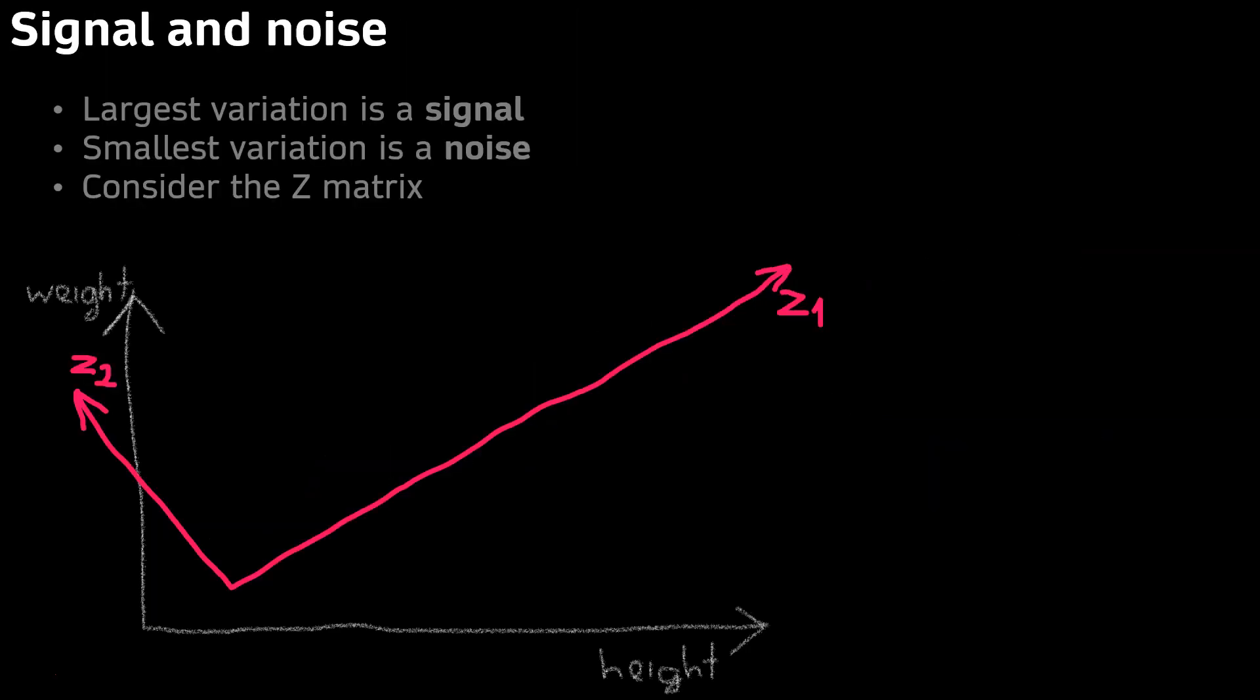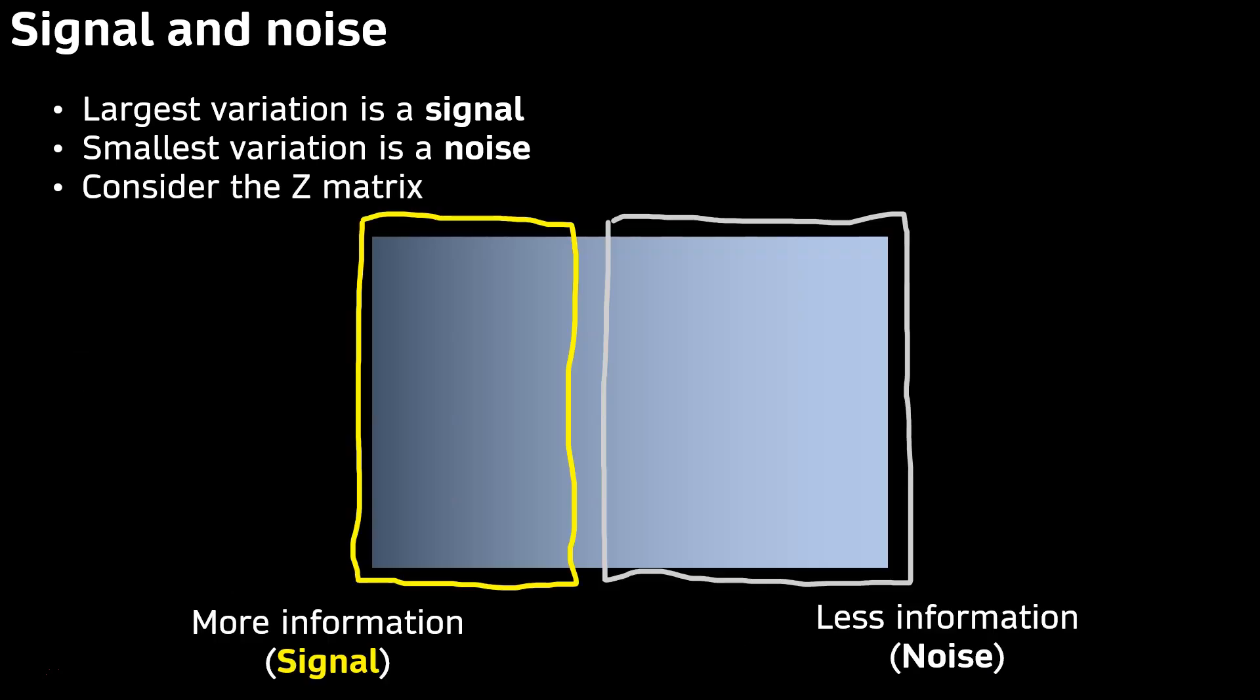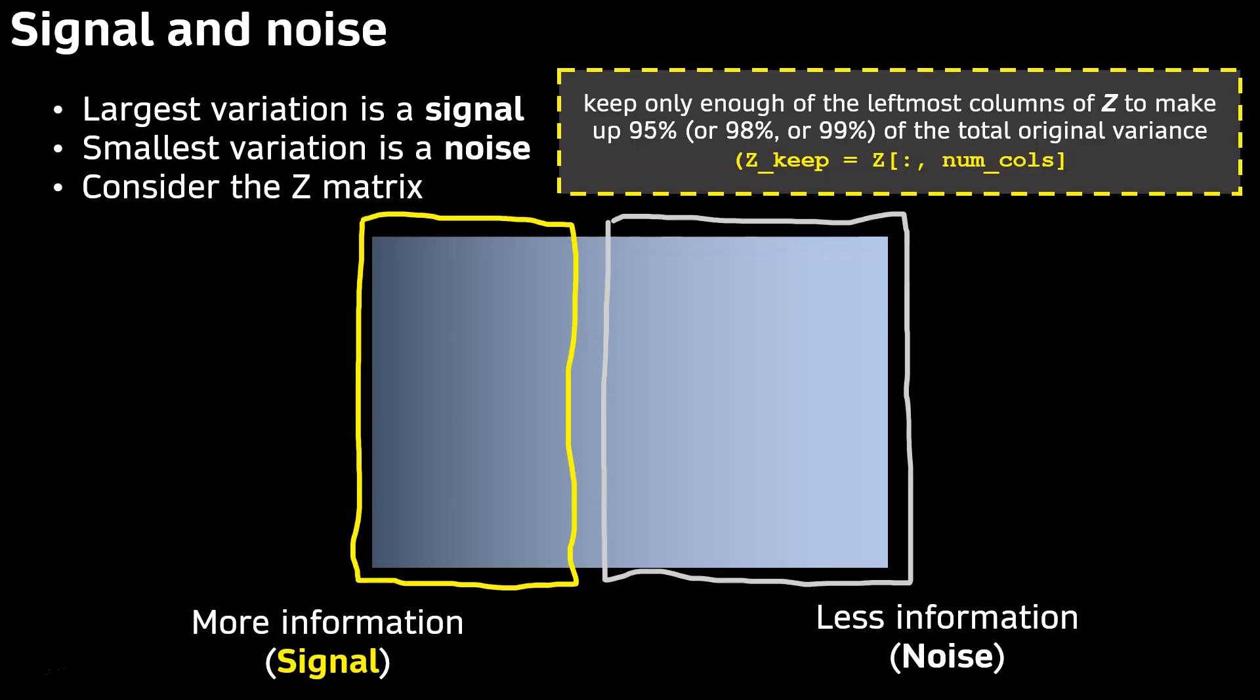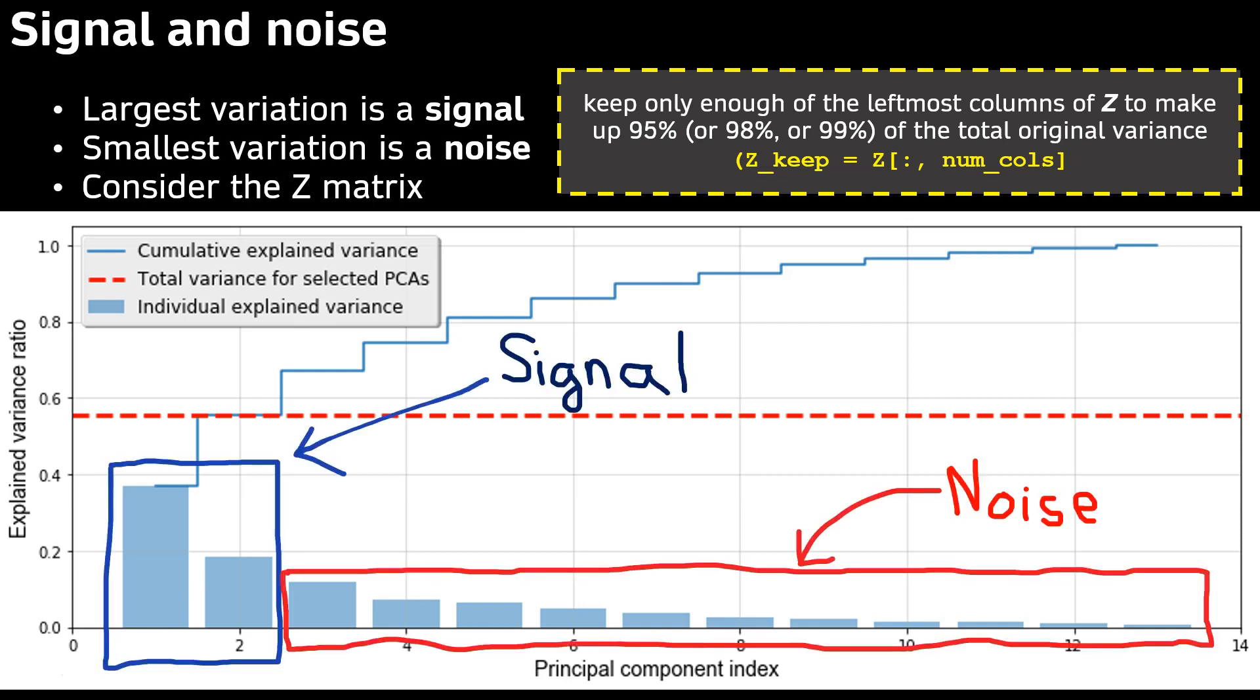Signal and noise: for this example, let's assume that the largest variation is a signal, the smallest variation is noise. Consider the Z matrix. We have the rule: keep only enough of the leftmost columns of Z to make up, for example, 95 or 98 or even 99% of the total original variance. This is dimensionality reduction.